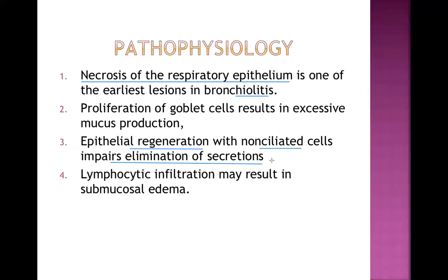Secretions collect in the small airway and can block it. At the same time, because of inflammation there is proliferation of goblet cells, which are present in high numbers and can produce excessive mucus. Lymphocytic infiltration may result in submucosal edema. So inflammation causes edema, excessive goblet cells produce mucus, and the epithelium lacks cilia — all these combined lead to the clinical features of bronchiolitis.